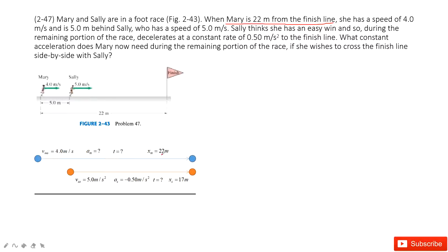She has a speed of 4 meters per second, so the initial velocity for Mary is 4 meters per second. And it is 5 meters behind Sally.